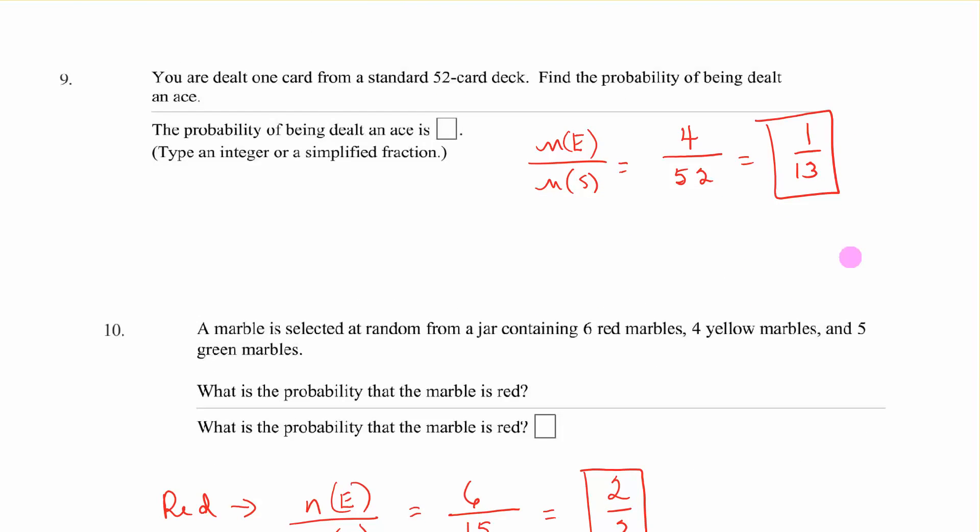You're dealt one card from a standard 52-card deck. Find the probability of being dealt an ace. We looked at that in the examples. The number of aces in the deck are 4. The number of the whole sample space is 52, so 4 out of 52 is 1 out of 13.